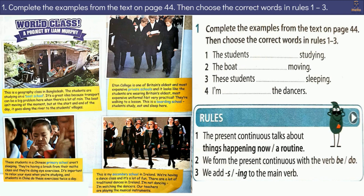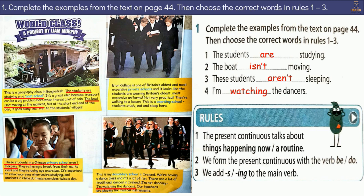Exercise 1: Complete the examples from the text on page 44, then choose the correct words in rules 1 to 3. Examples: 1. The students are studying. 2. The boat isn't moving. 3. These students aren't sleeping. 4. I'm watching the dancers. Rules: 1. The present continuous talks about things happening now. 2. We form the present continuous with the verb be. 3. We add -ing to the main verb.